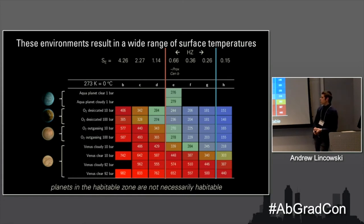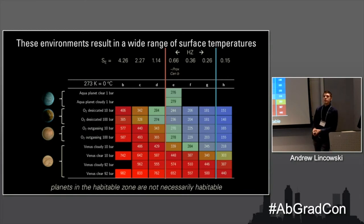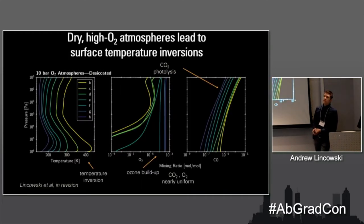When I model these atmospheres and compute surface temperatures, the story becomes more complicated. The habitable zone is only a first-order indicator of habitability. Putting different types of atmospheres on the same planet shows that the habitable zone is not a guarantee — you can span from 600 Kelvin for a Venus-like atmosphere all the way down to 180 Kelvin for just an oxygen atmosphere on a colder planet. An aqua planet gives more cases with habitable temperatures inside the habitable zone than outside, so it's still a useful indicator.